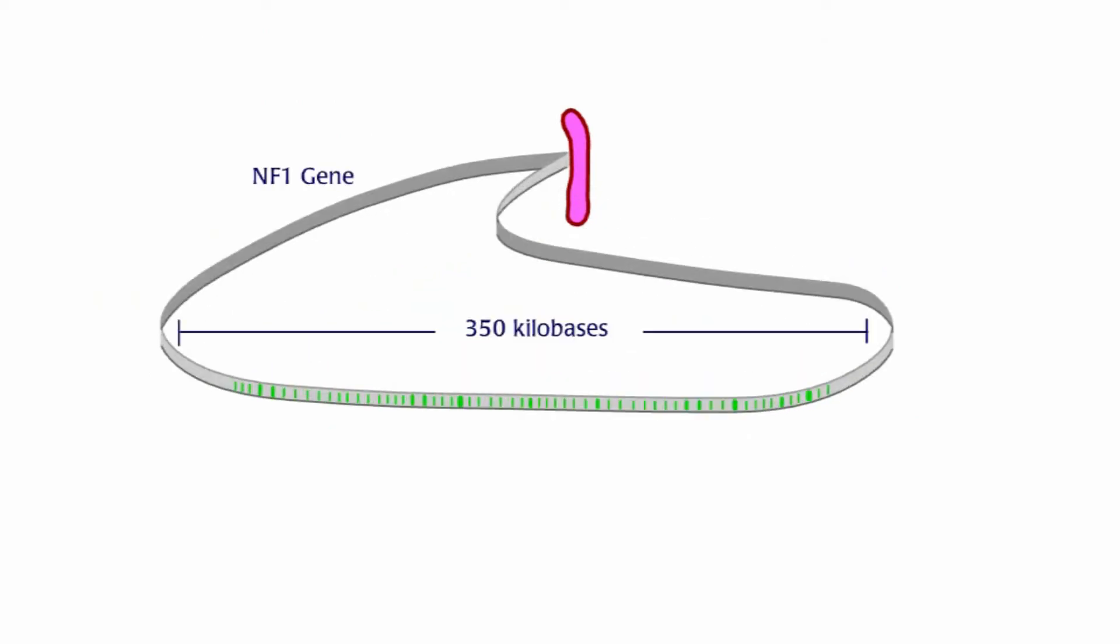NF1 is a large gene. The 60 coding regions of the gene, exons, are spread out over 350 kilobases. This gene makes a protein called neurofibromin.